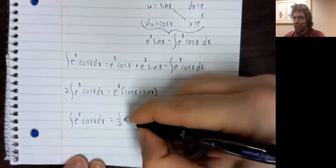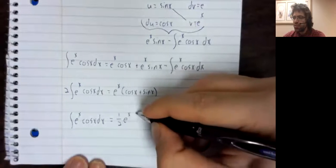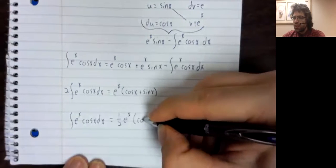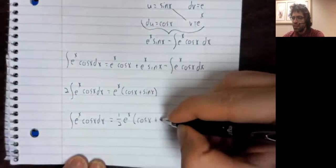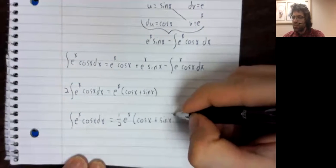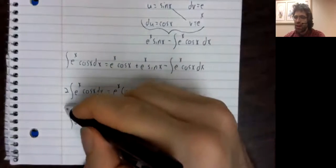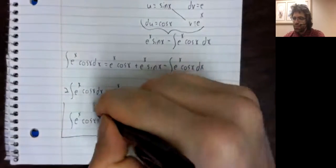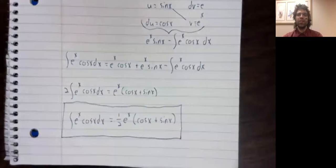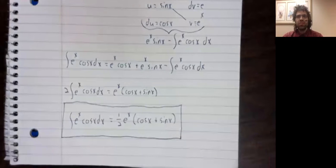E to the x times the cosine. E to the x times the sine. And there then is our integral. You can use the same trick to integrate e to the x times the sine of x.